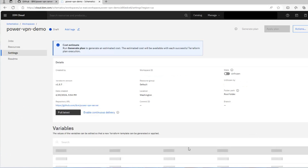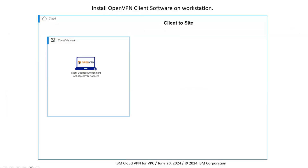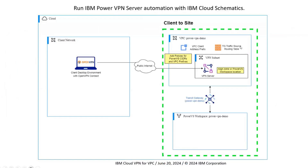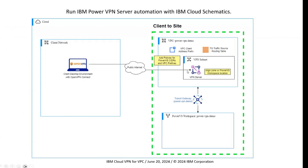The workspace will have a bunch of variables we'll need to set — we'll walk through those in a minute. While it's pulling up, let's look at a diagram of what it's going to create. Currently we have our workstation with OpenVPN Connect installed. The automation will create everything in the green box: a new VPC with a VPN server, a transit gateway to tie that VPN server to the Power VS workspace it creates. Once connected through the VPN server, you'll be able to communicate directly to the private network in that workspace.